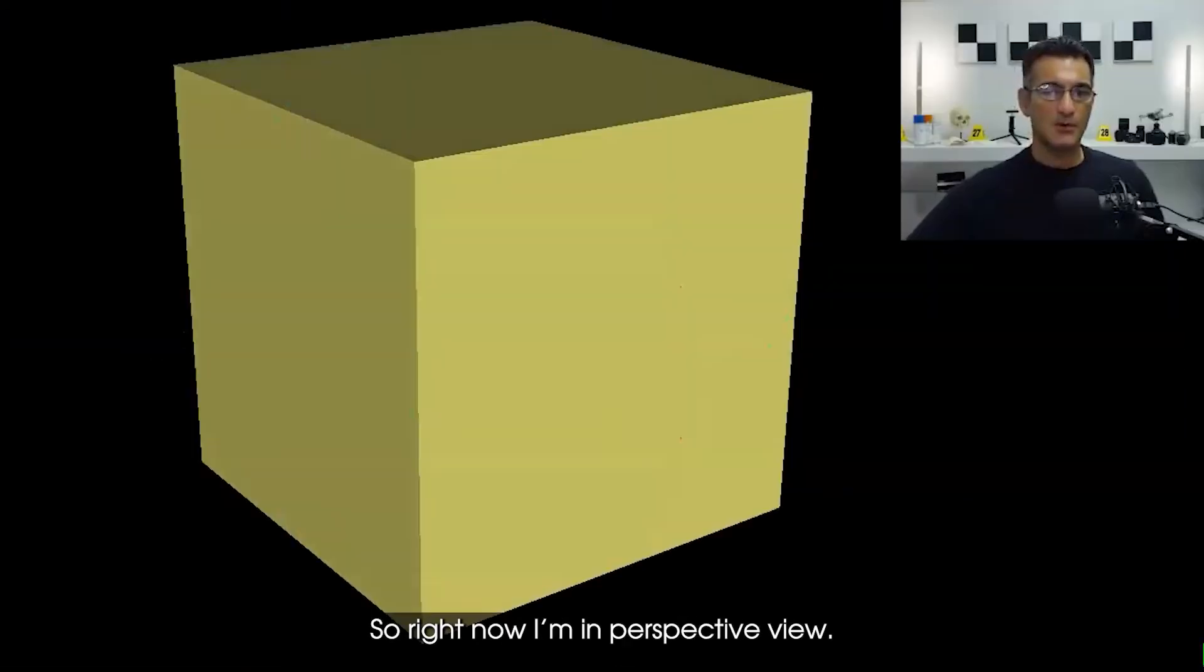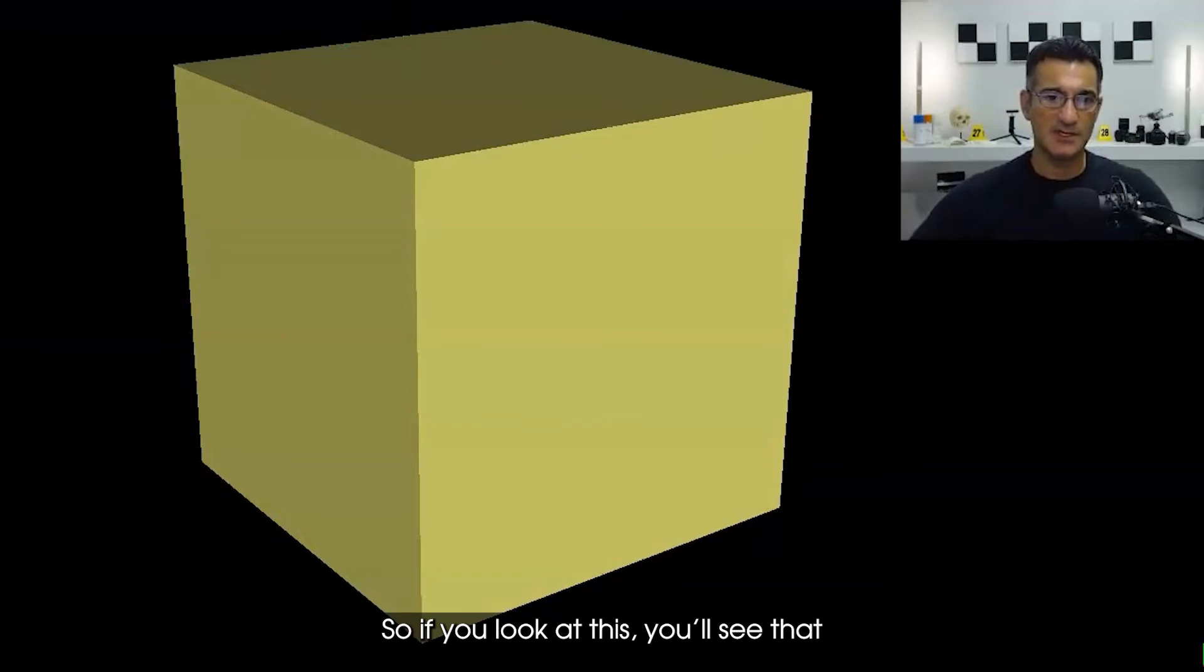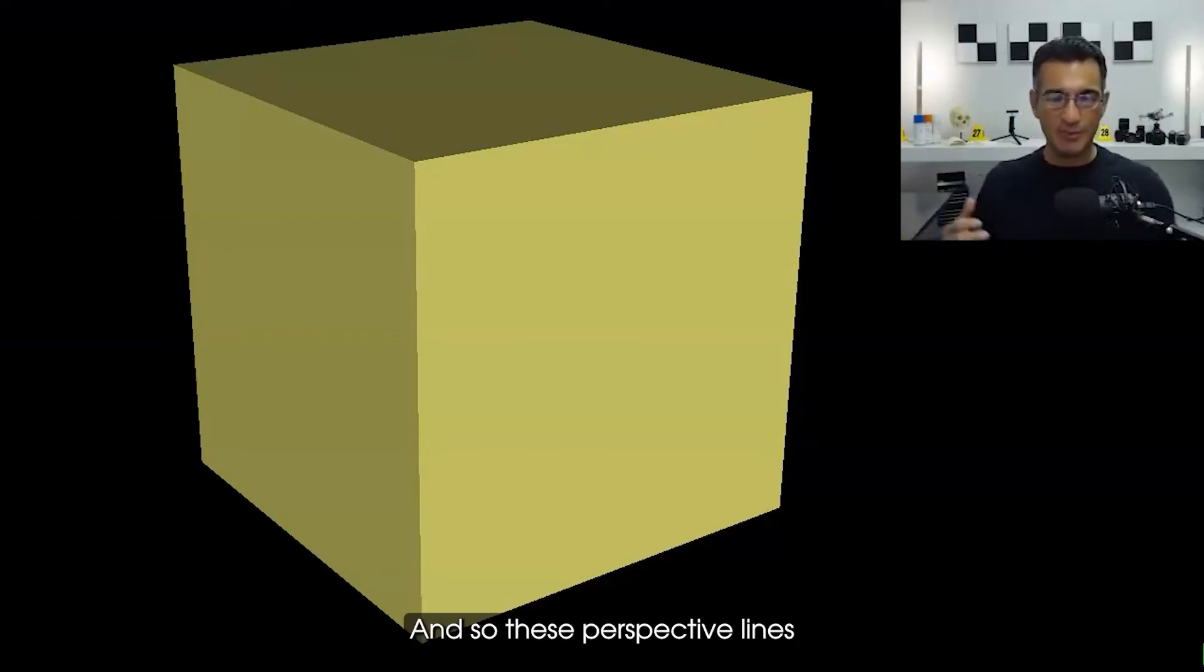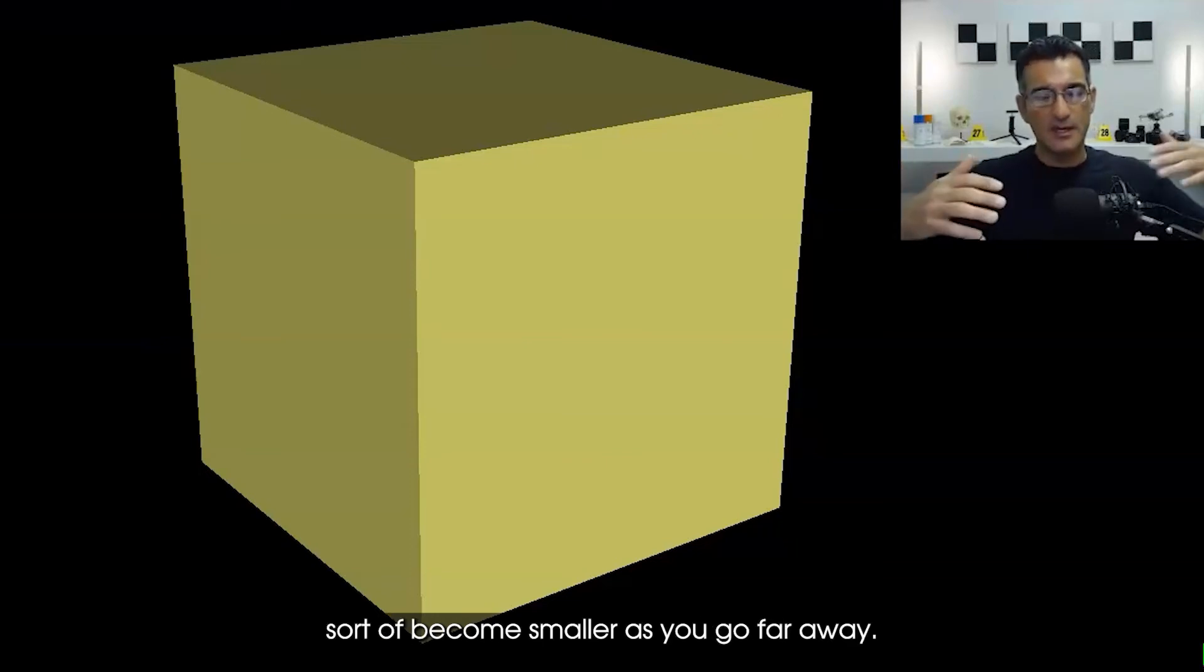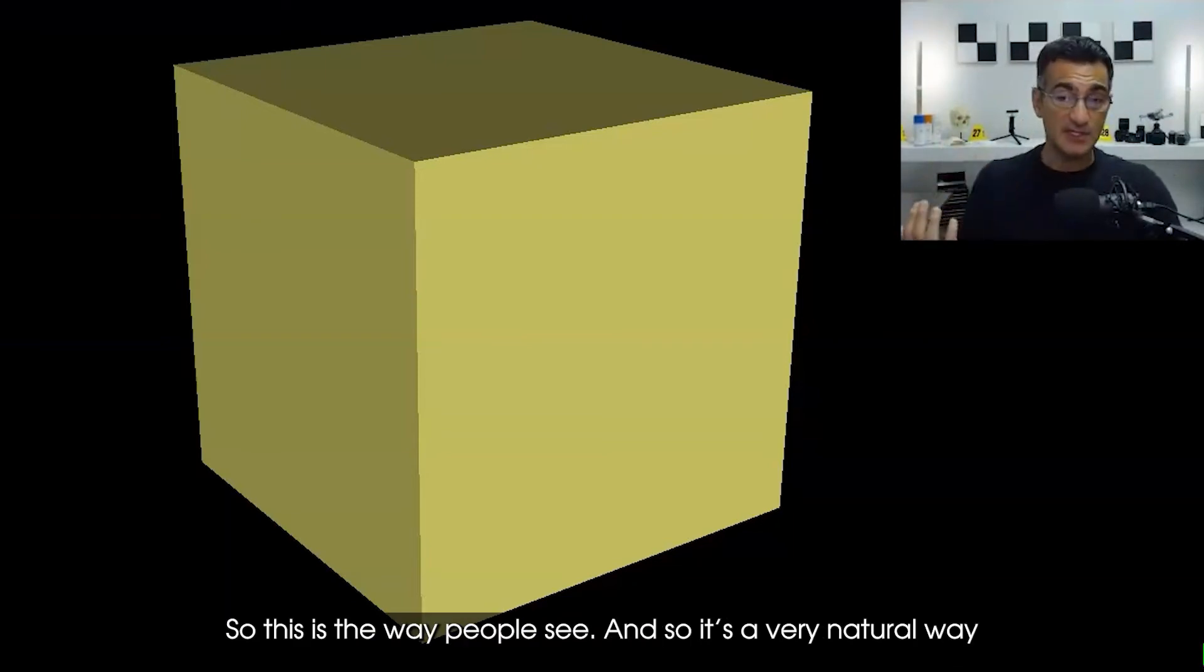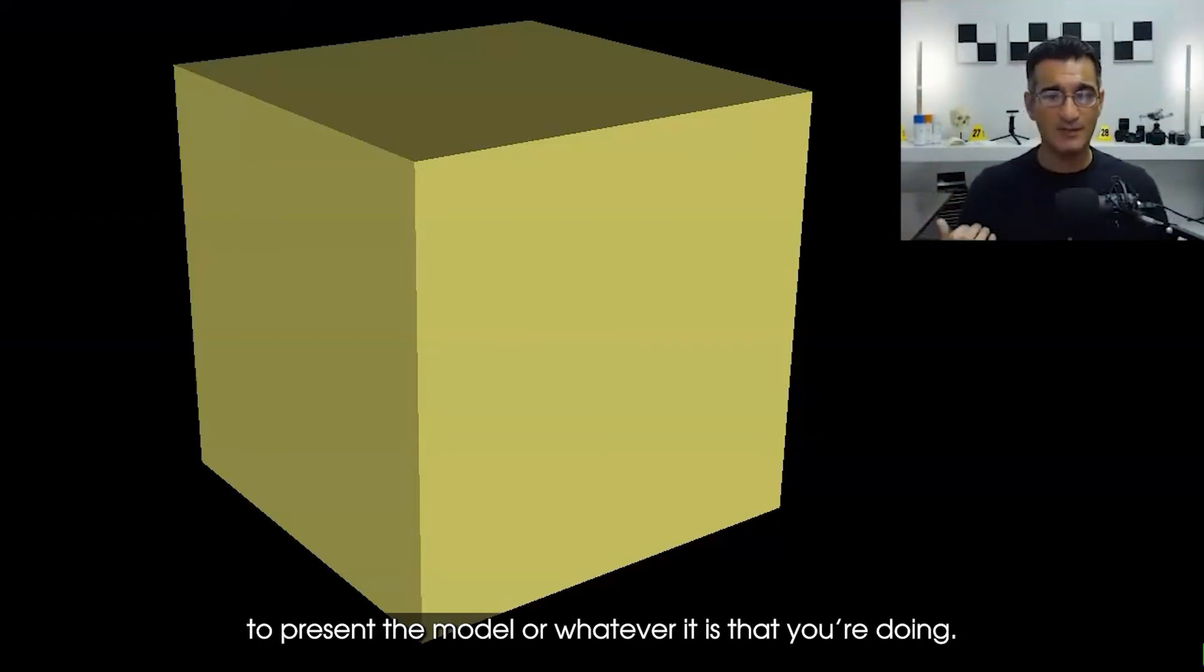Right now I'm in perspective view. If you look at this you'll see that the top here is a little bit bigger than the bottom, or the parts that are farther away are a little bit smaller than the parts that are in front of us. These perspective lines sort of become smaller as you go far away - these are like vanishing lines and that sort of thing. This is the way people see and so it's a very natural way to present the model or whatever it is that you're doing.